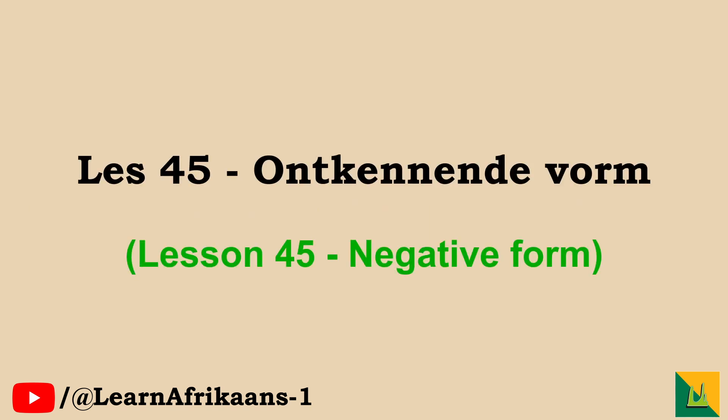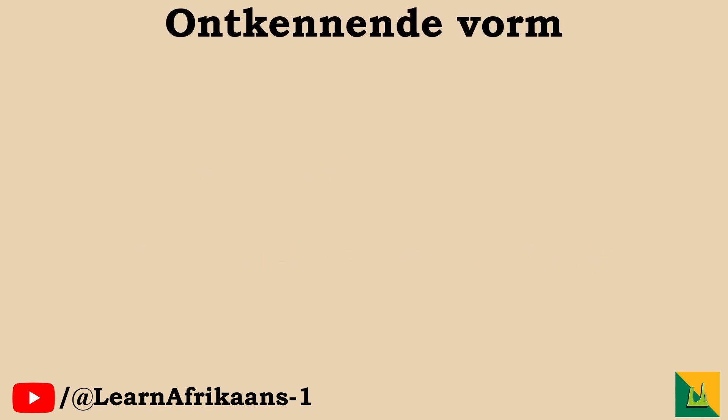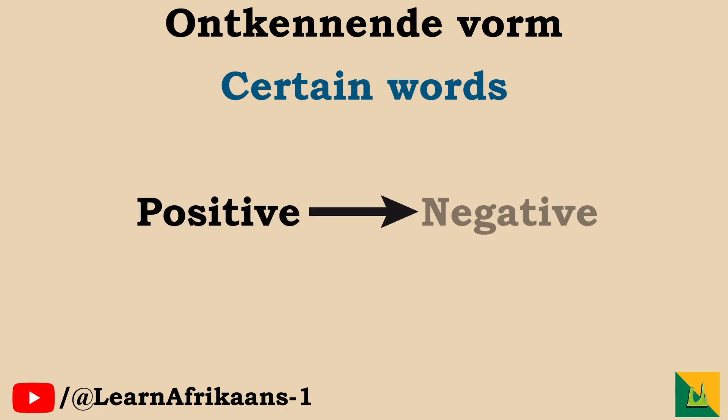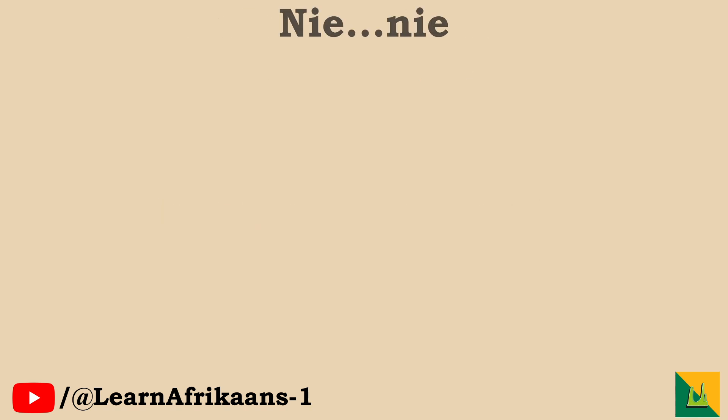Les 45, die ontkennende vorm, the negative form. This video is part of our grammar section of our beginners series. The ontkennende vorm is pretty self-explanatory. There are certain words in Afrikaans that can be used in order to change a sentence from the positive to the negative form. The most important word is nie.